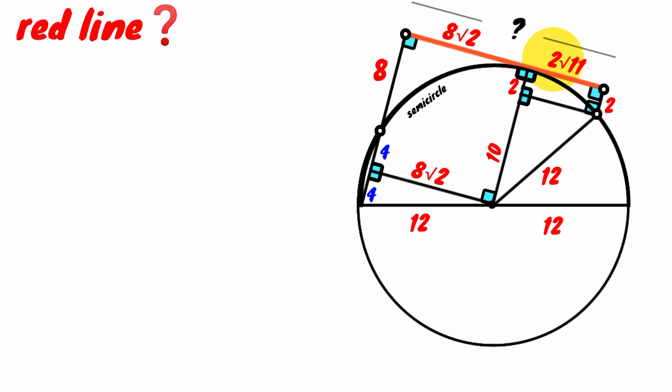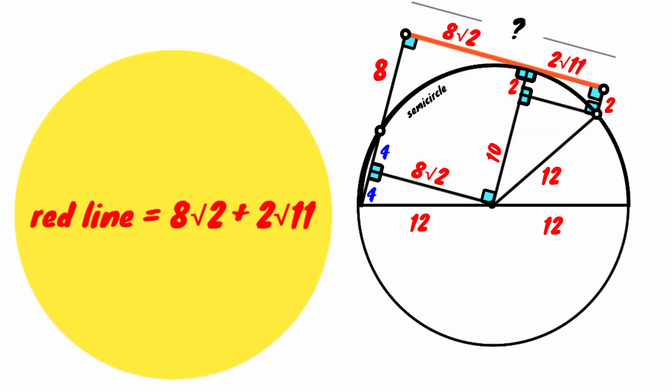The sum of this 8 root 2 and this 2 root 11 gives the length of the red line. So red line equals 8 root 2 plus 2 root 11.